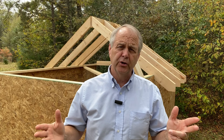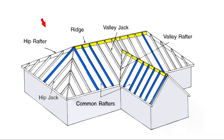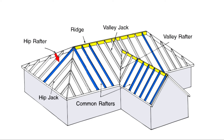A hip roof is a roof that slopes in all directions like a pyramid. This drawing shows a hip roof — a regular hip — which has the same roof pitch on all sides. The common rafters are highlighted in blue, and on a regular hip roof, since it has the same pitch all the way around, these common rafters will all be the same length, including the one on the end of the ridge.